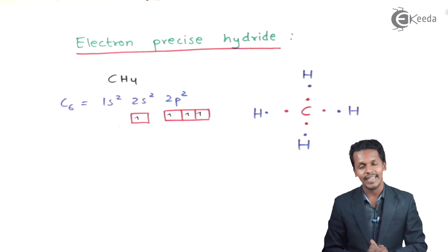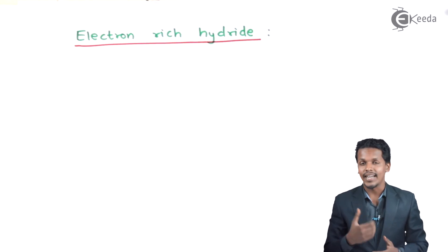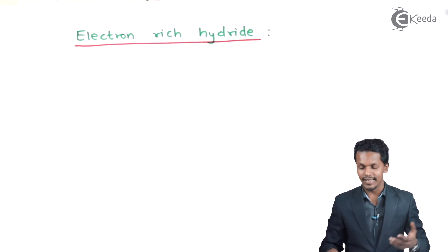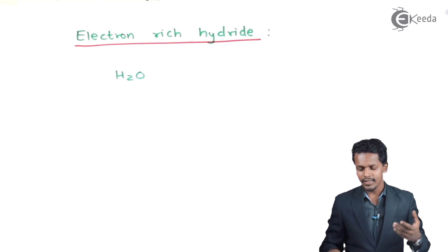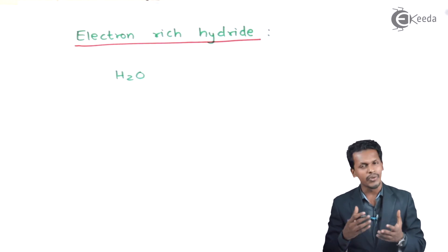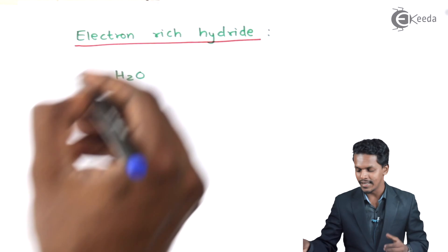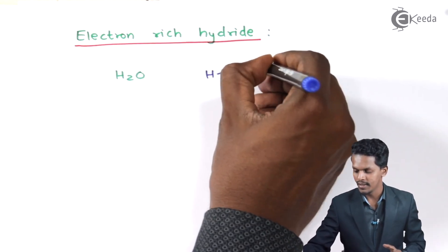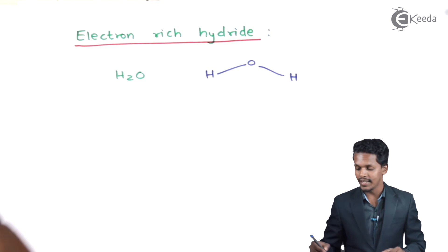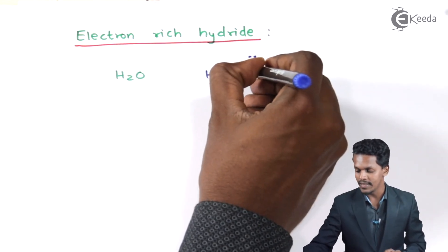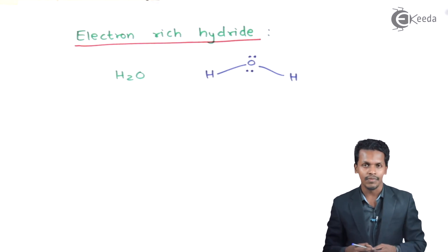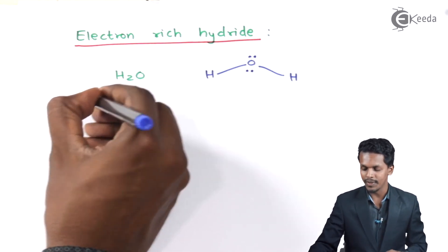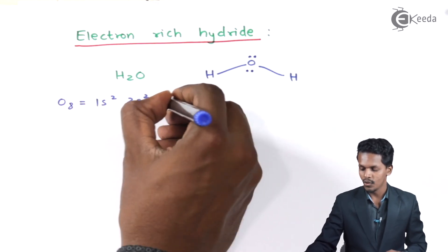Now, talking about electron-rich hydrates — an example is H2O. In the Lewis structure of H2O, we can see there are two lone pairs of electrons on the oxygen atom. The electronic configuration of oxygen, atomic number 8, is 1s², 2s², 2p⁴.